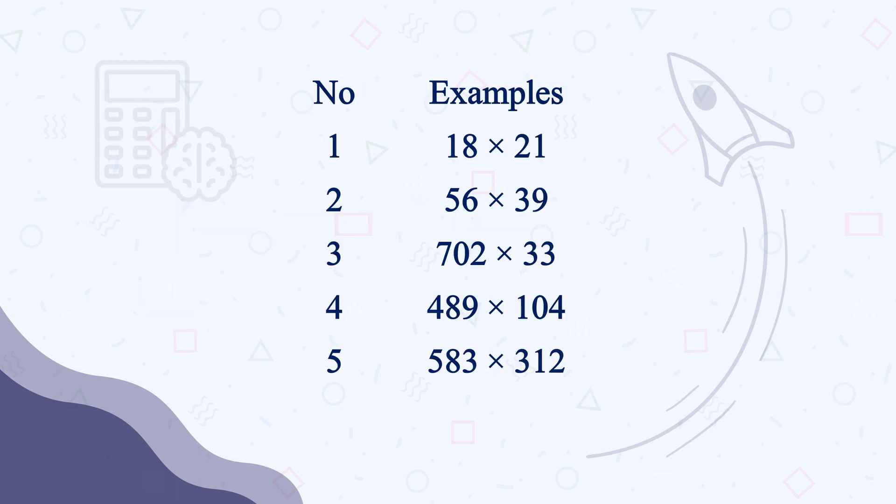Now we will practice 5 more examples and increase difficulty one by one. Number 1 is 18 times 21. Number 2 is 56 times 39. Number 3 is 702 times 33. Number 4 is 489 times 104. And number 5 is 583 times 312.